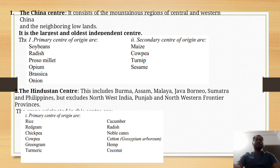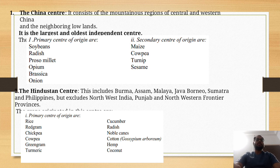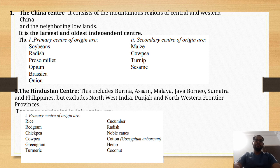The first center is China's center of origin. This is the oldest center of origin. The region is Central and Western China. Central and Western China is the oldest center of origin. The primary center of origin crops here include soybean, radish, prosomillet, opium, brassica, and onion.